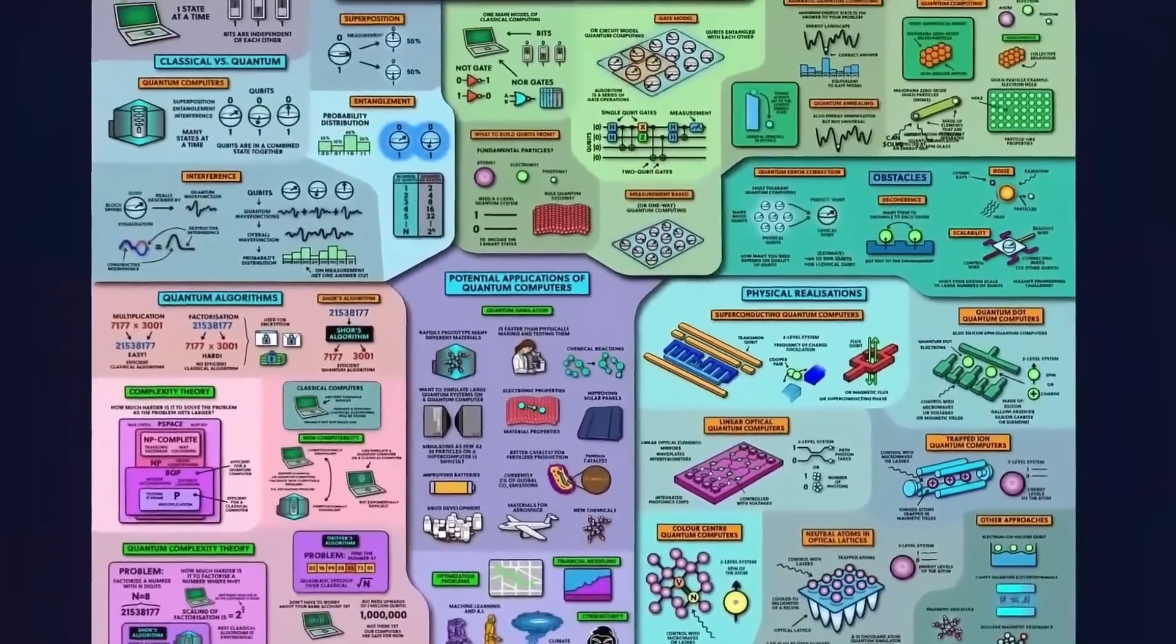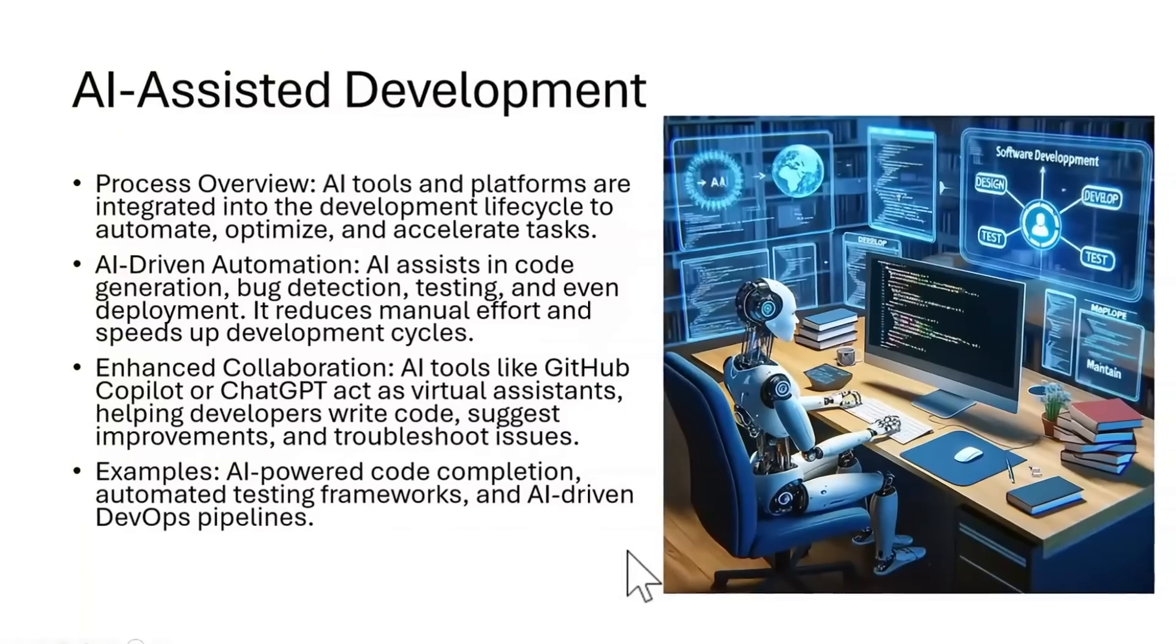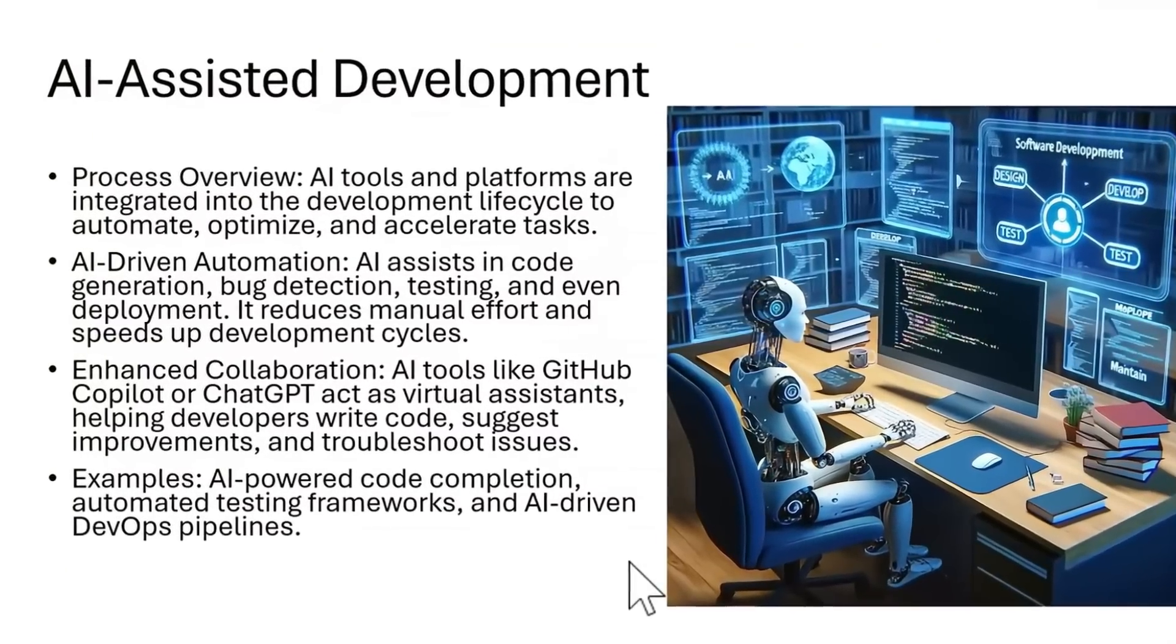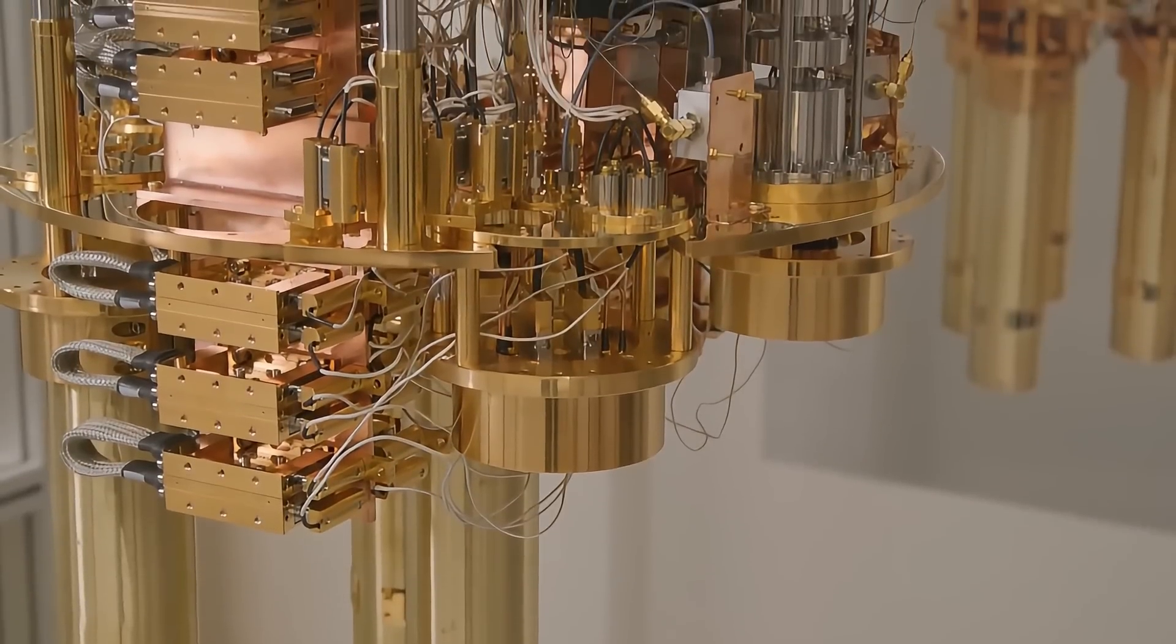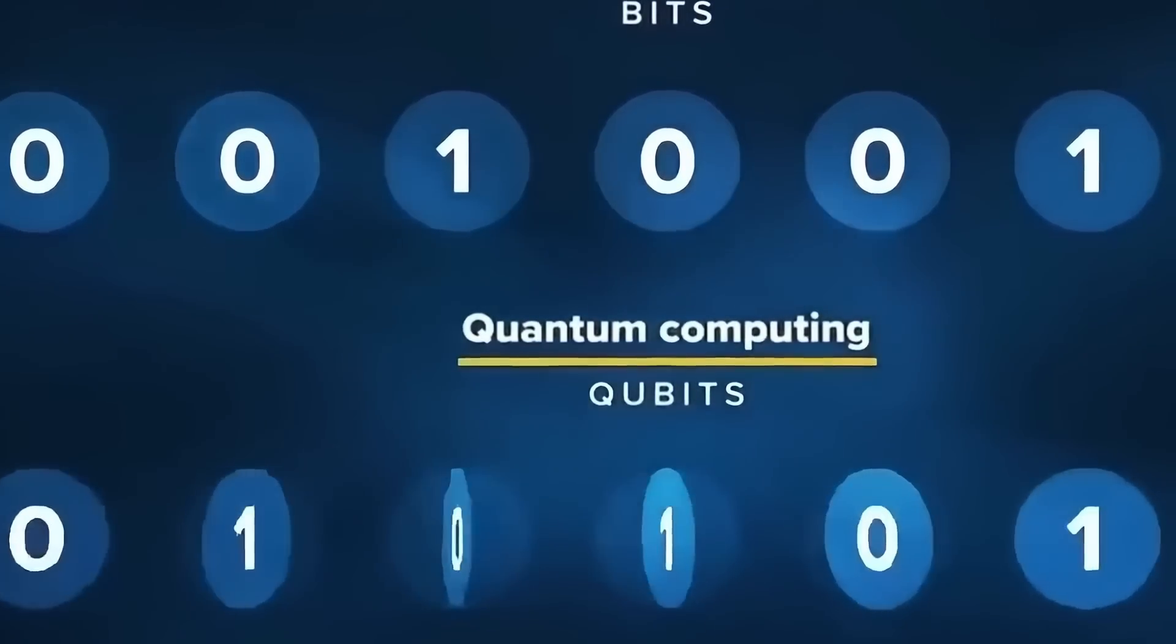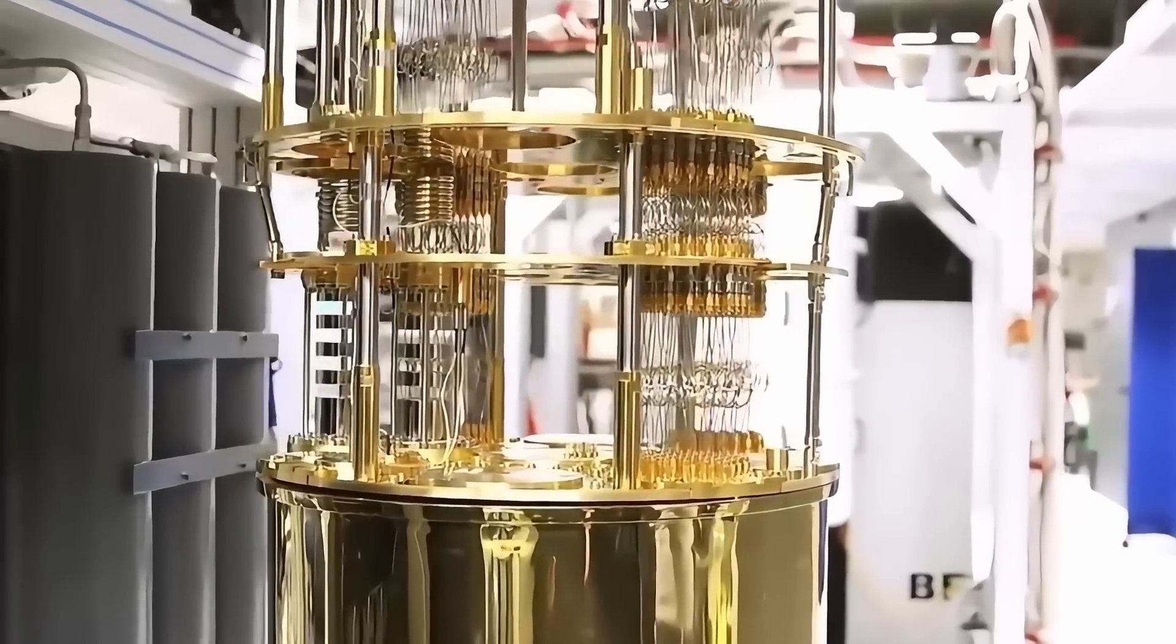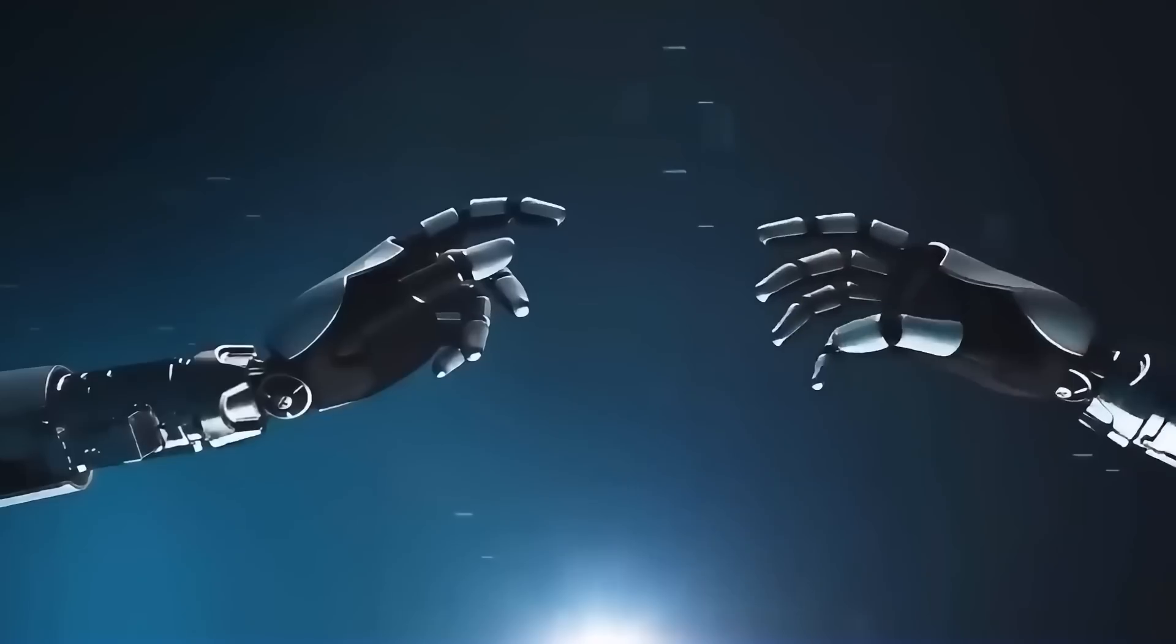Quantum computing doesn't just make AI faster, it supercharges it. Traditional AI is bottlenecked by processing power and energy consumption. But with quantum computing, AI can process millions of calculations simultaneously, unlocking problem-solving abilities beyond anything we've seen.